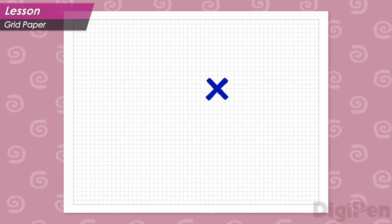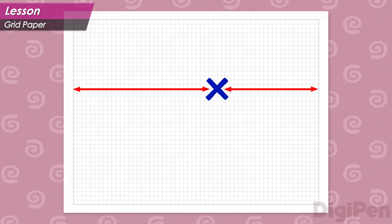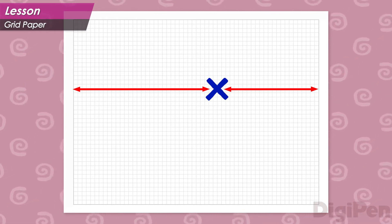Here we have a sheet of grid paper. If you make a mark on the paper and you want to describe its position, you need to figure out two numbers. One for where it is between the left and right sides of the paper.